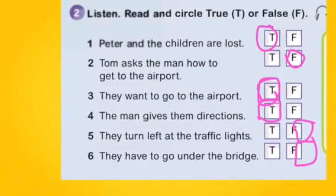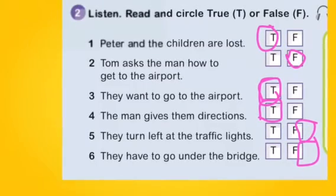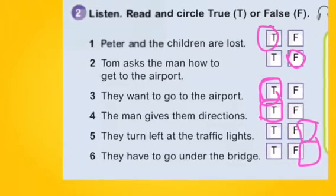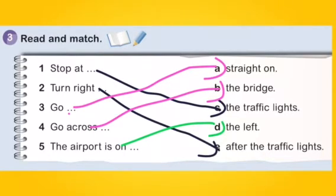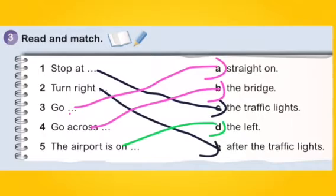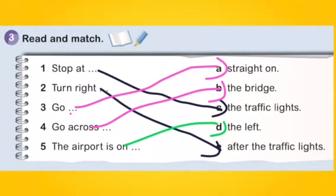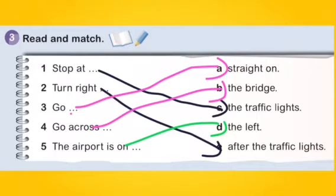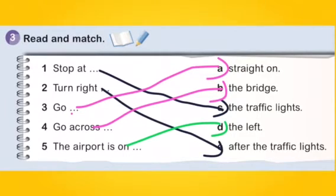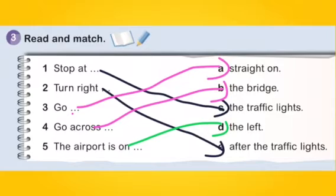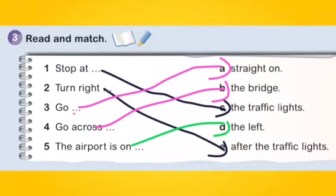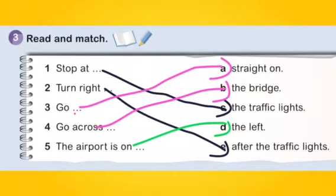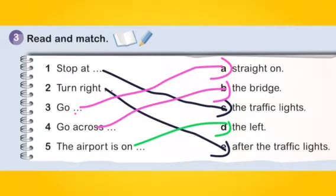Number six: They have to go under the bridge — False. And match. We have two columns. Column A: Number 1 Stop at, Number 2 Turn right, Number 3 Go, Number 4 Go across, Number 5 The airport is on the. Column B: A straight on, B the bridge, C traffic lights, D the left, E after the traffic lights.